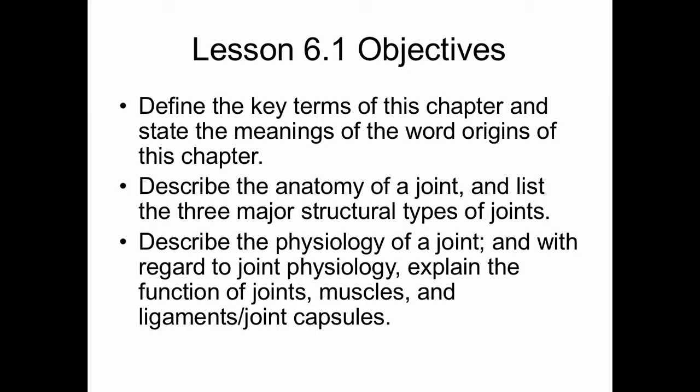The next two slides describe the objectives of Section 6.1 of Chapter 6. Your textbook has a list of key terms and word origins for each chapter. Most of these terms will become familiar as the material is covered, but reviewing them, especially the word origins, before reading the chapter can be very helpful. I would recommend that you check into the Evolve website offered with your textbook and see the terms and descriptions they offer there. There are also some practice questions and reading that can be helpful to your studying.